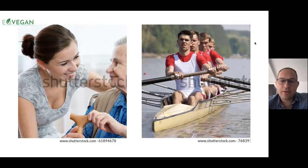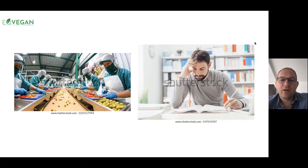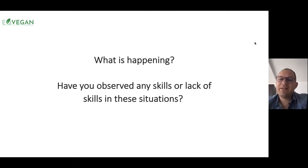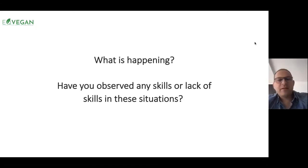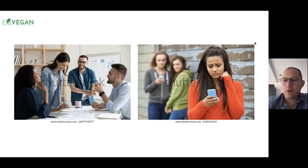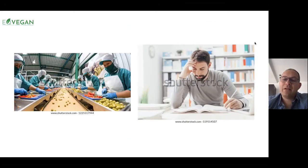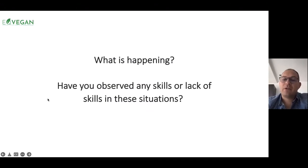So the first two situations are shown, then we move on to the next set of two photo situations, and the final set are these two photo situations. Then I ask: what is happening? Have you observed any skills or lack of skills in these situations? I don't expect immediate answers, so I give them a minute and possibly go back slowly to show them once again, because now they know the question.